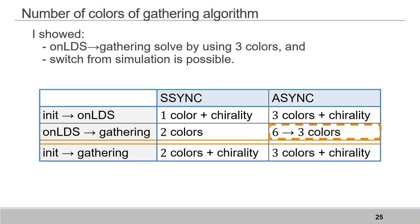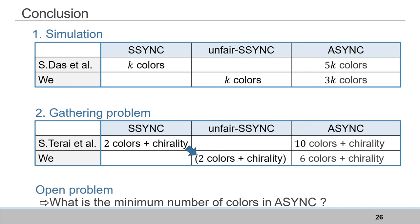I want to finish with a summary. Our results indicate the following. First, we showed that an unfair Ssync algorithm using k colors is simulated using 3k colors. Next, we defined a monotonically decreasing potential function of the gathering algorithm in Ssync, so we can adapt our simulation for gathering and get the result of six colors and chirality. We further reduced colors from six to three by combining our simulation and one more algorithm. The open problem is what the minimum number of colors with non-rigid movement in Ssync is. Since gathering for two robots needs two colors, we estimate that the gathering problem needs at least three colors. That's all for my presentation. Thank you.